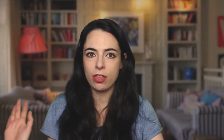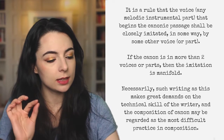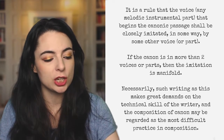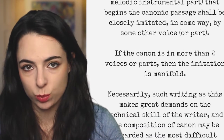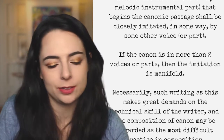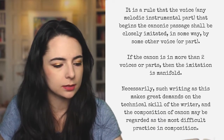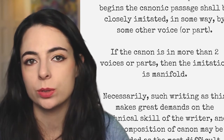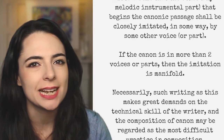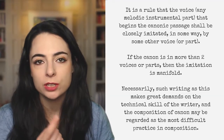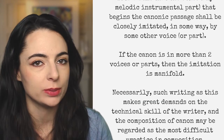It is a rule that the voice — that's any melodic instrumental part — that begins the canonic passage shall be closely imitated in some way by some other voice or part. If the canon is in more than two voices or parts, then the imitation is manifold. Such writing makes great demands on the technical skill of the writer, and the composition of canon may be regarded as the most difficult practice in composition.